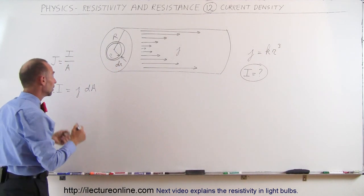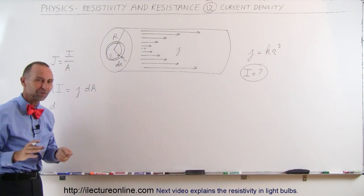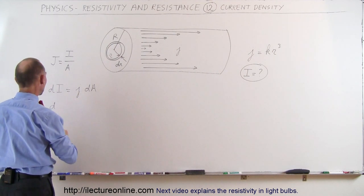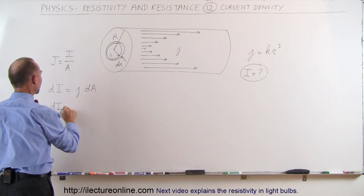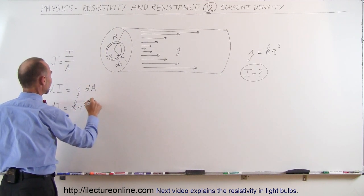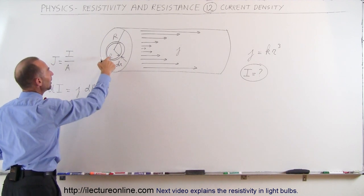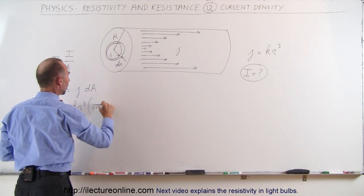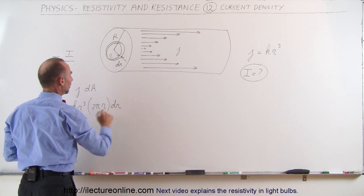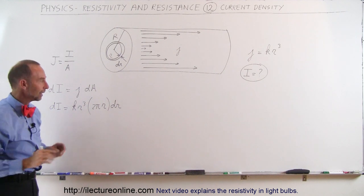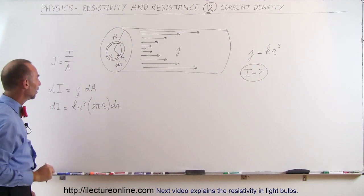So when we plug in the numbers, or at least not the numbers per se, we're not ready to do that yet, but when we plug in what J and DA are equal to we get a small amount of current is equal to J which is K times R cubed times DA and DA will be the circumference times the thickness would be 2 pi R times DR. That would be the surface area of this little ringlet there. And that would be the DA of our equation.